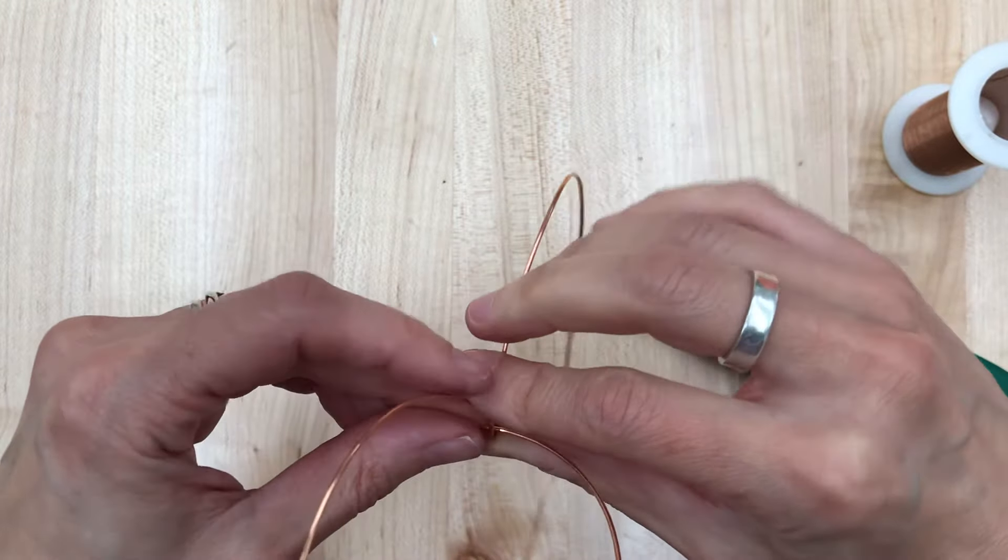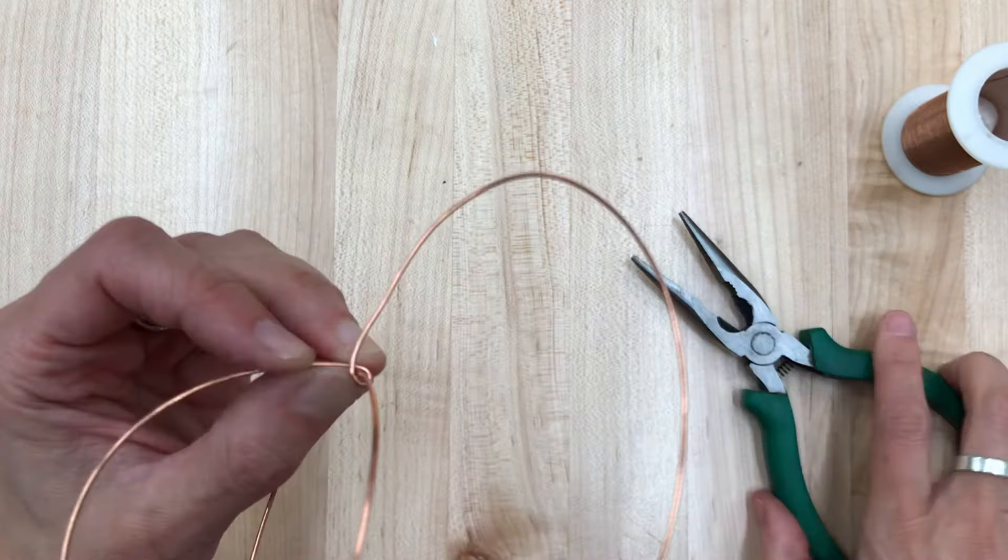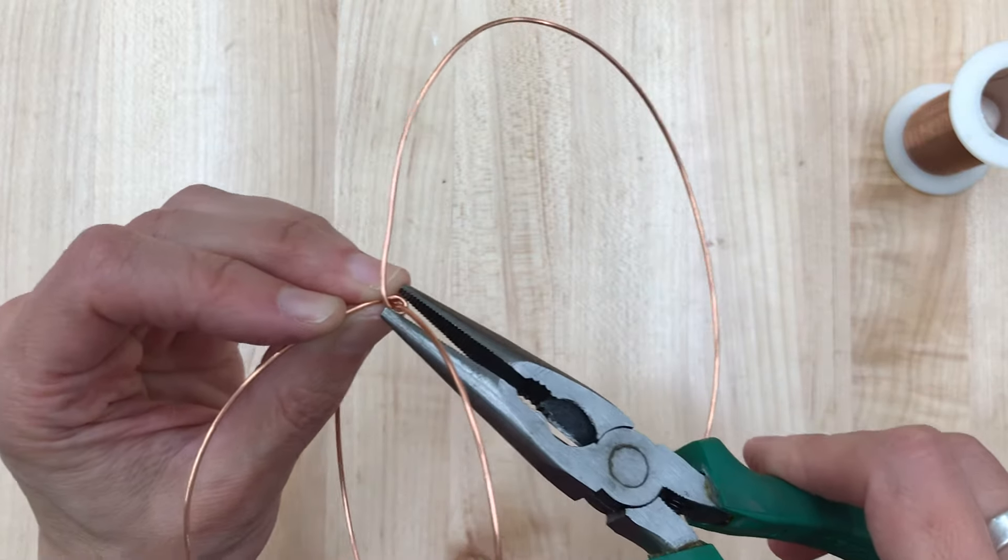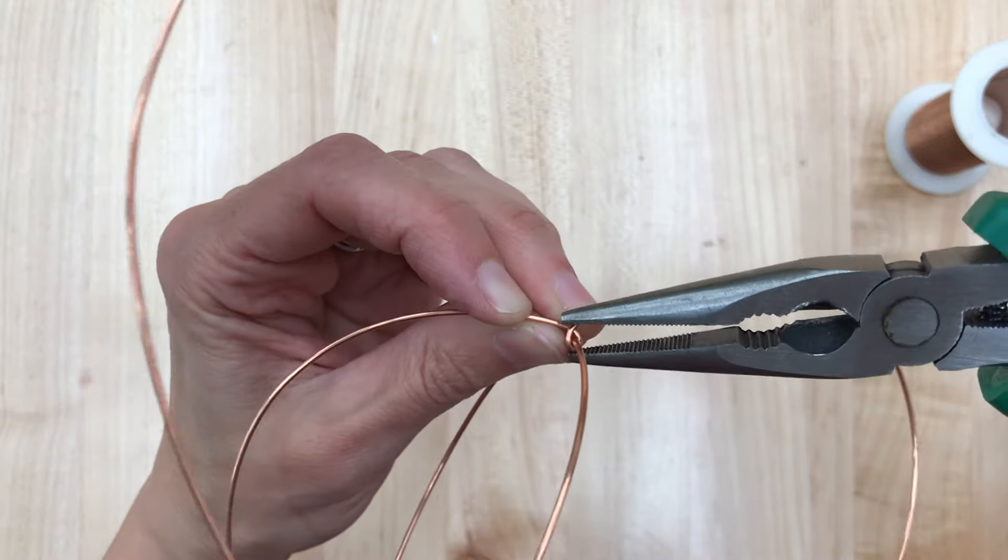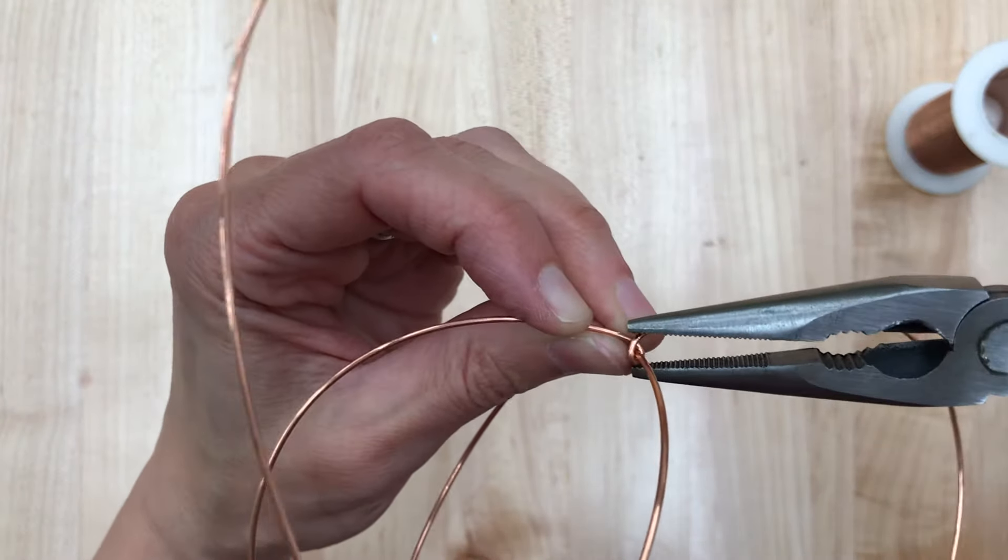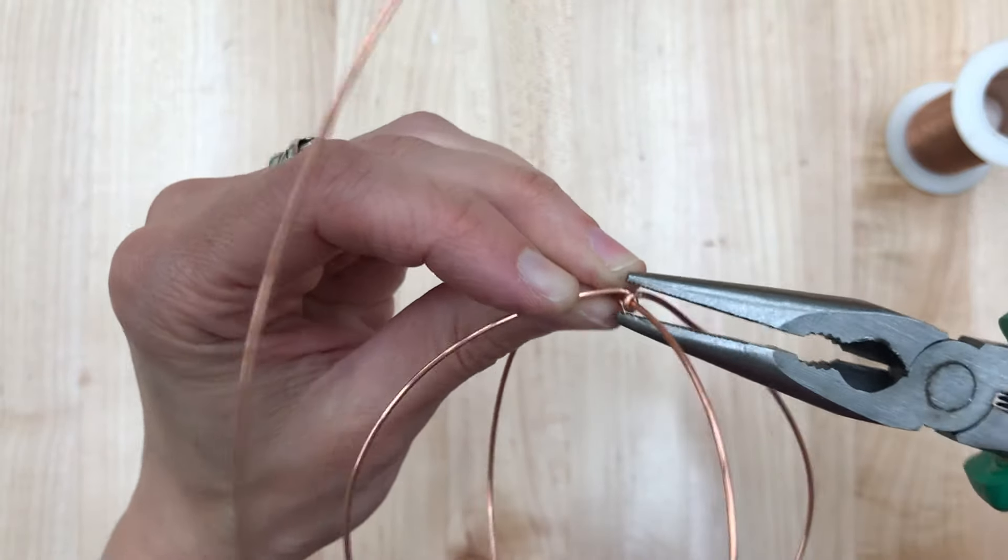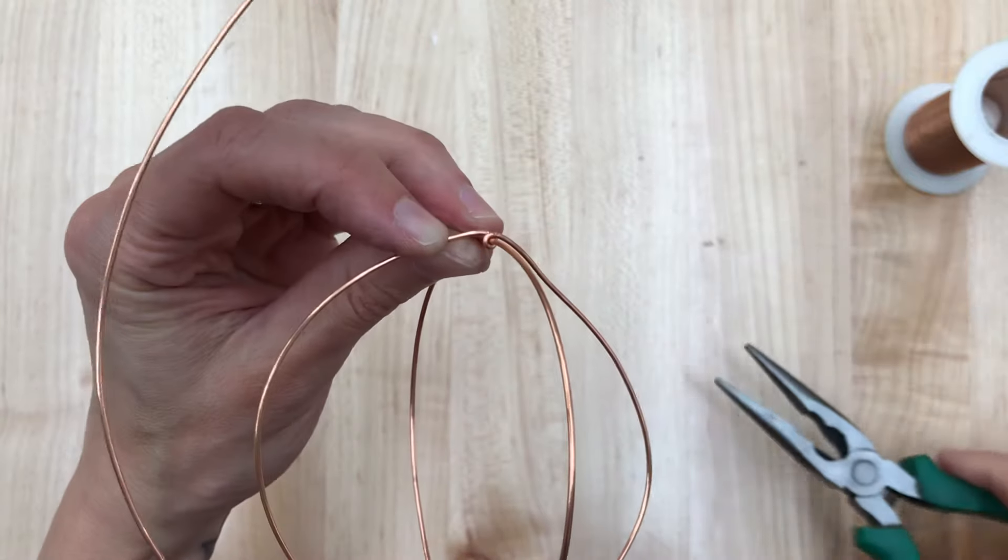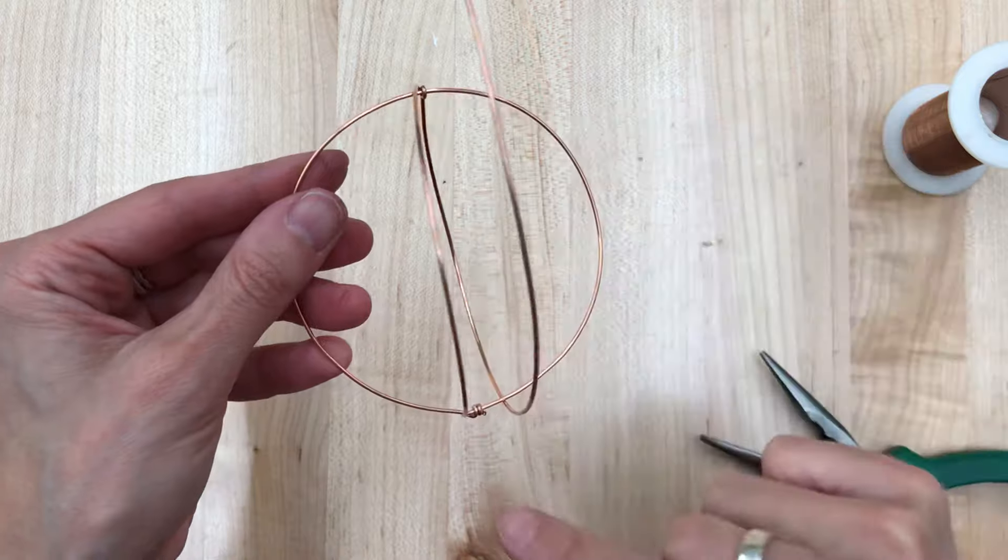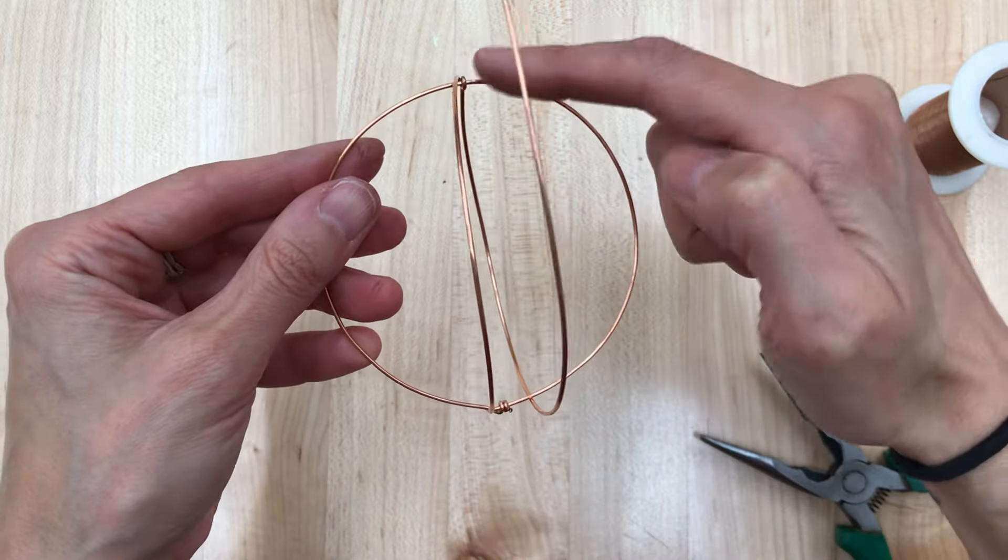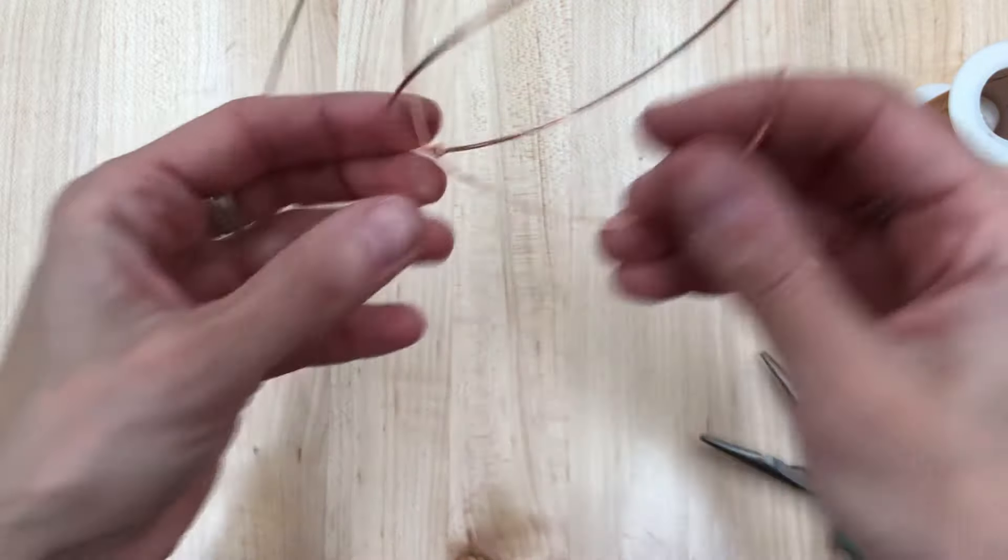Sometimes the pliers aren't handy for everything. Okay. So again, squeeze. And squeeze. Okay. Before I do anything else, I just want to double check. Is it on opposite sides of the circle? Are they more or less even? Things look good.